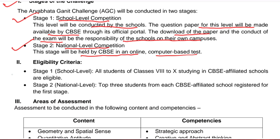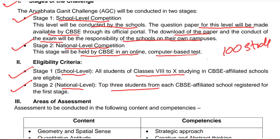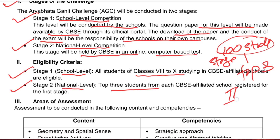For Stage 1, the school level, the eligibility criteria is simple: all students of classes 8 to 10 studying in a CBSE affiliated school are eligible to participate. For Stage 2, the national level, eligibility is different — only the top 3 students from each CBSE affiliated school who registered for the first stage can proceed. For example, if a hundred students participated in Stage 1, only the top 3 will advance to Stage 2.